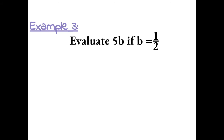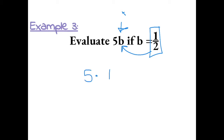Evaluate 5 times b if b equals 1 half. Remember, a number next to a variable means multiplication. So, when we plug in 1 half for b, we have to multiply it with 5, which we can show using the dot symbol.